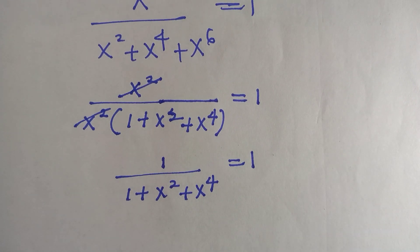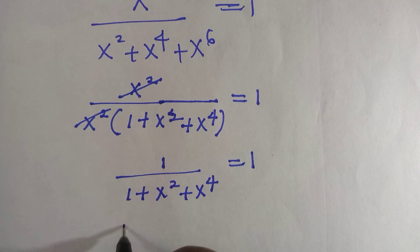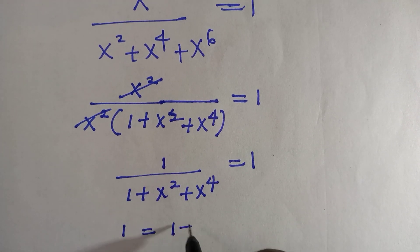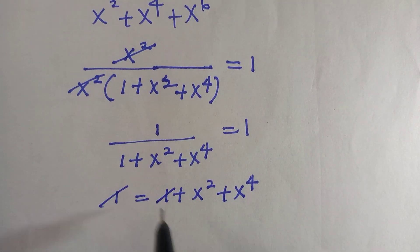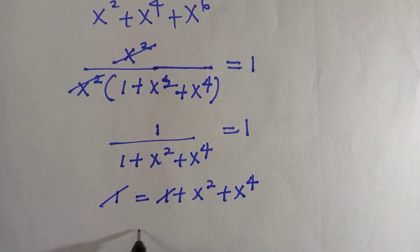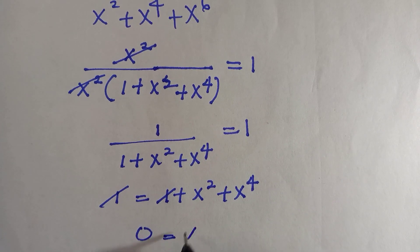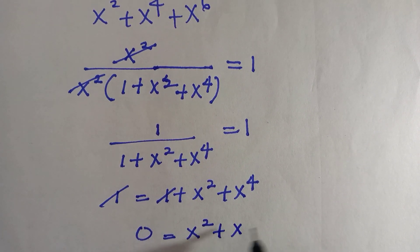At this stage, I will cross multiply and by doing that, we have 1 equals 1 plus x squared plus x raised to power 4. So there is 1 at these 2 sides, so I will cancel this. It remains 0 here equals x raised to power 2 plus x raised to power 4.